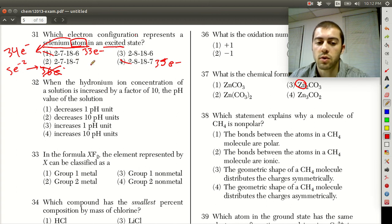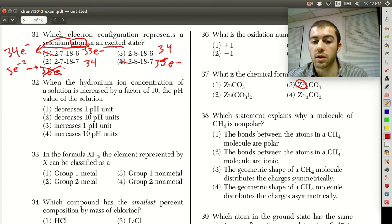2 and 3, if we count these up, those both have 34 electrons each. So we know those are both selenium atoms potentially. So which one of these would be an excited state? Remember, the excited state is when we take an electron from a lower energy level and promote it to a higher energy level.